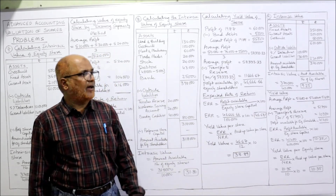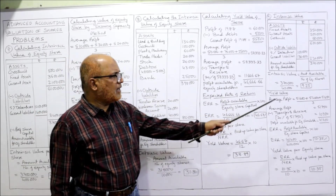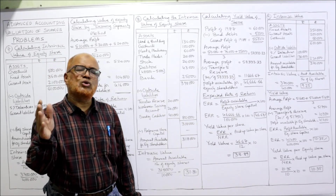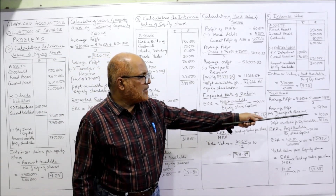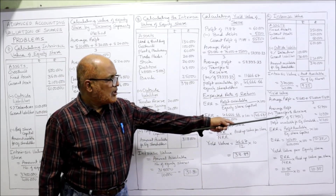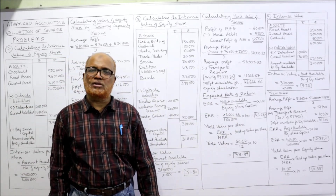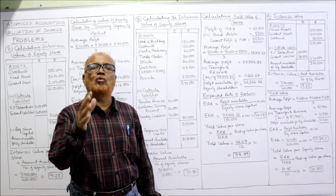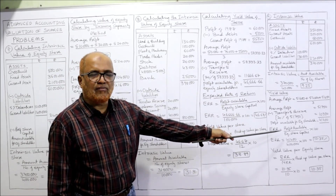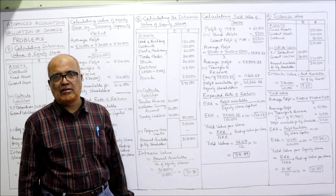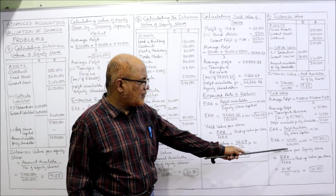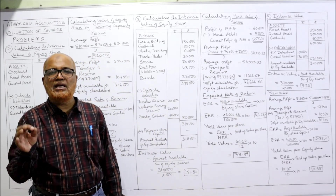Now we calculate the yield value. Average profit — simple average: add all 3 profits and divide by 3 = 51,750. Average profit 51,750 minus 20% transfer to reserve = 10,350. Remaining profit available for equity shareholders: 41,400. ERR = profit available ÷ equity share capital × 100 = 41,400 ÷ 4 lakh × 100 = 10.35%.